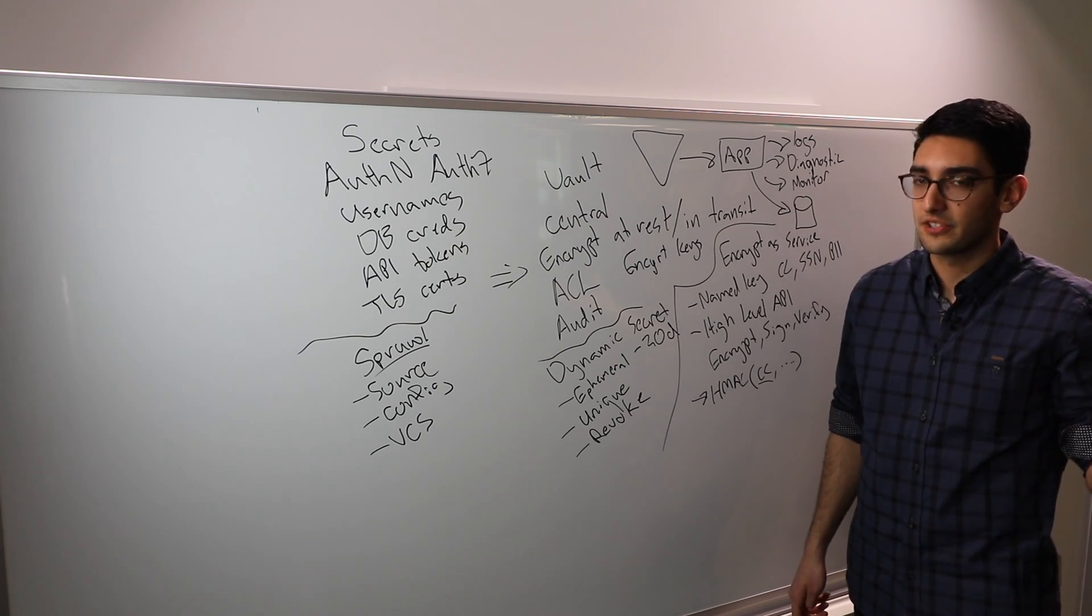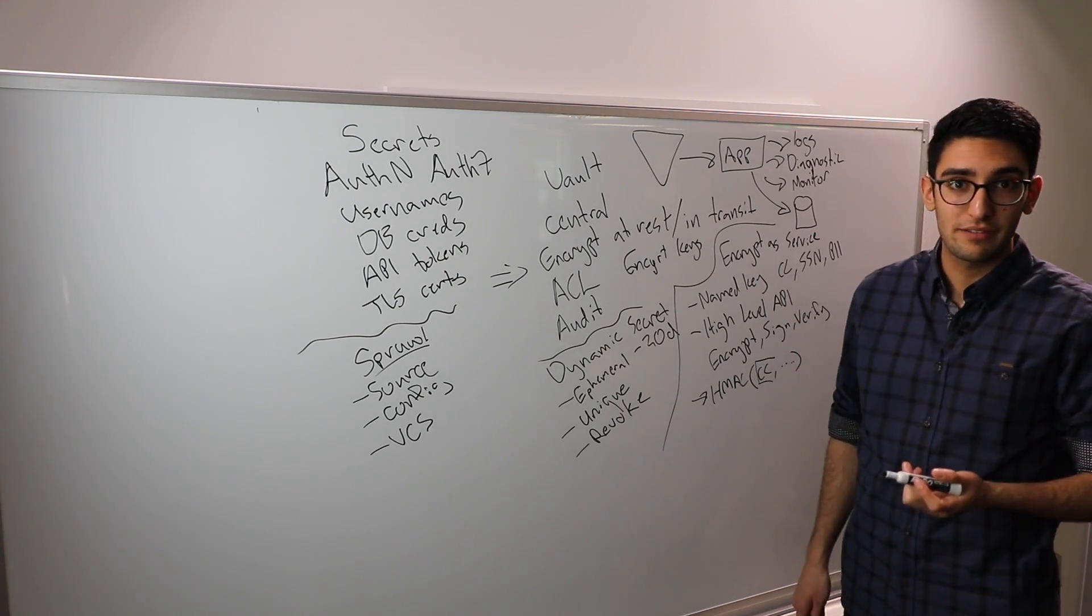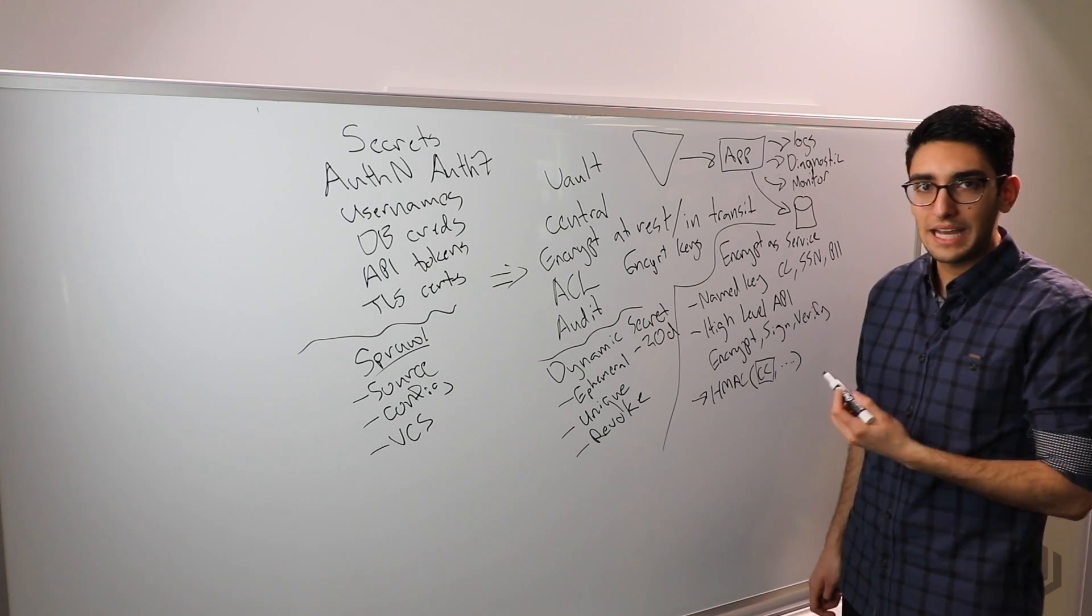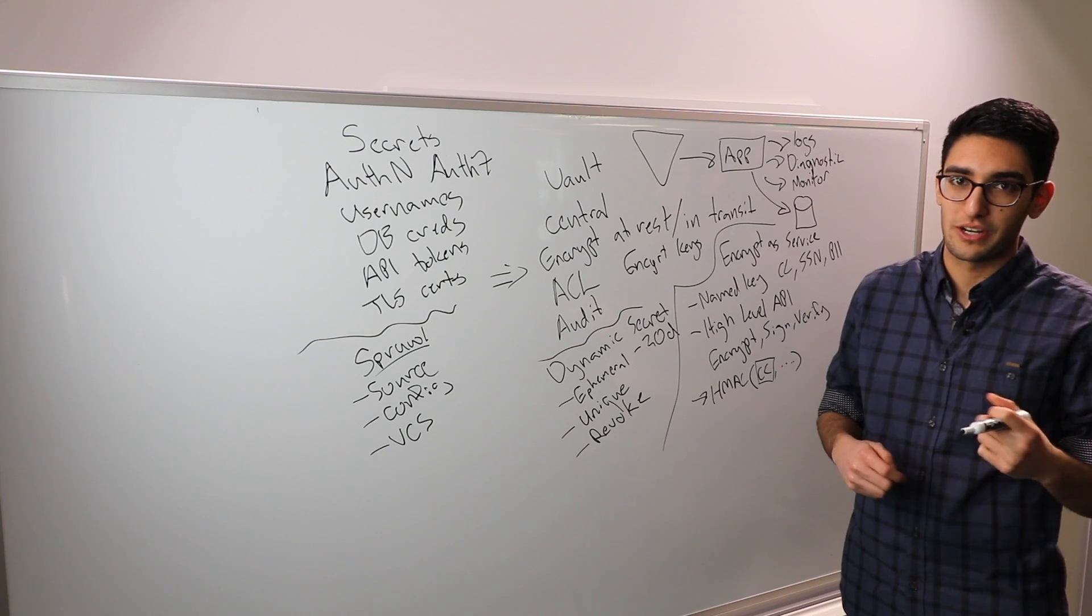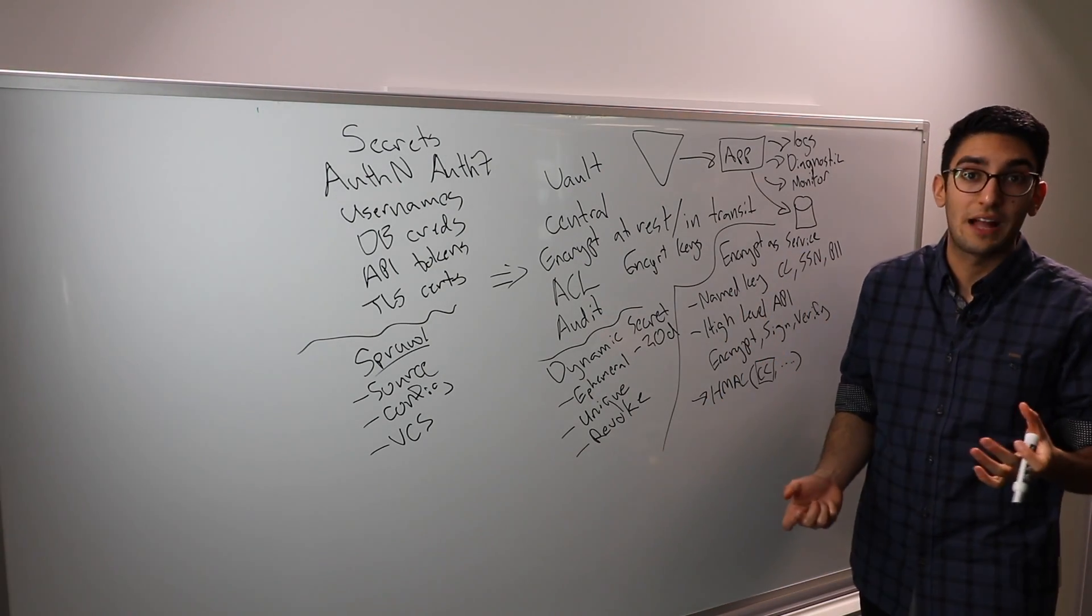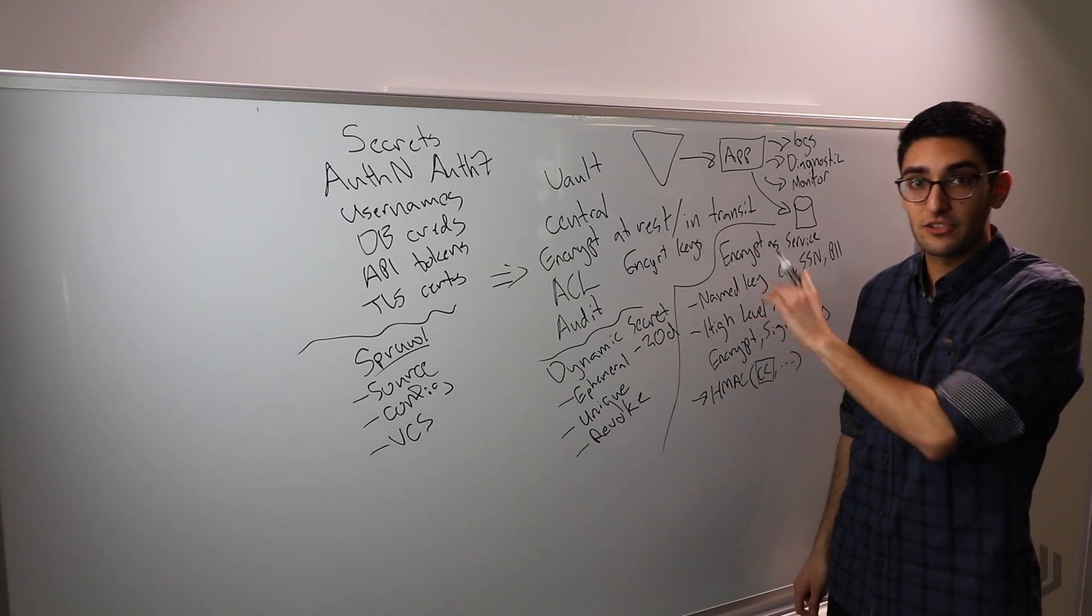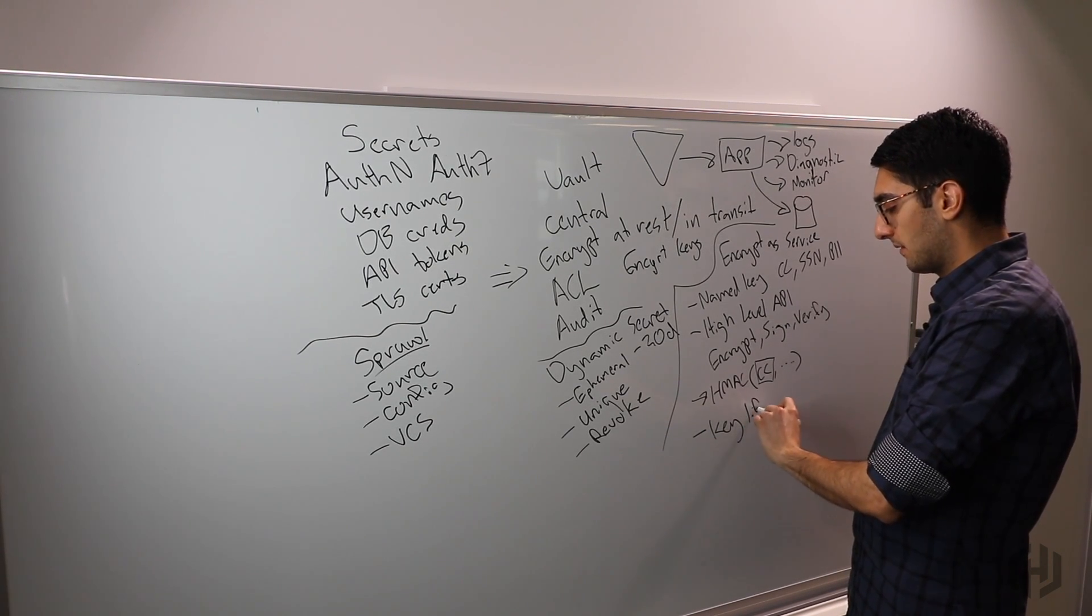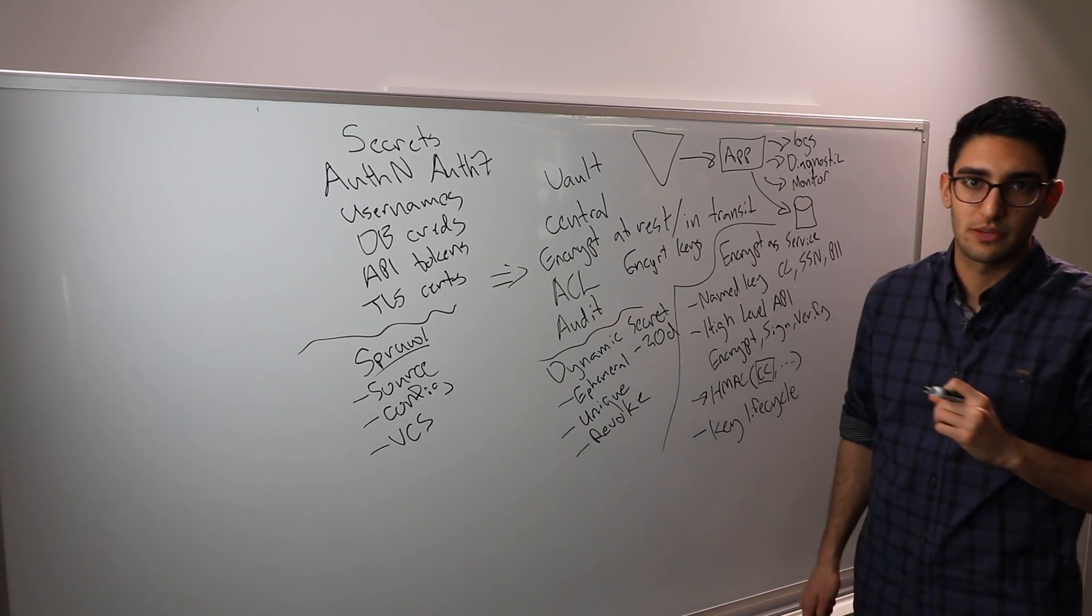It also lets us offload key management. If we think cryptography is hard, key management is even harder. In practice, when you ask how many applications properly implement key versioning, key rotation, key decommissioning, and the full lifecycle of key management, the answer is very few because it's challenging. By offloading this to Vault, we can use high-level APIs to do all this, so we get the full key lifecycle as well provided by Vault.